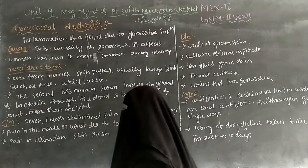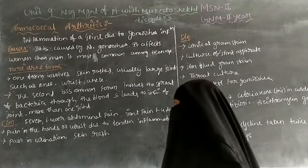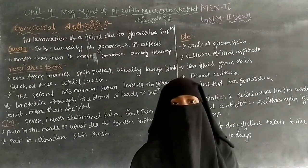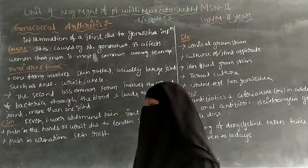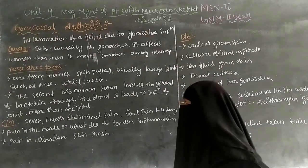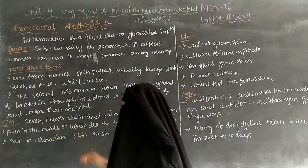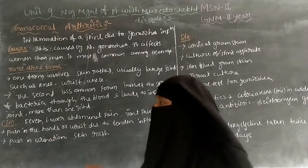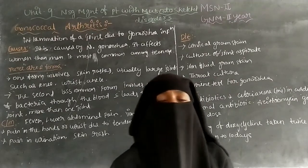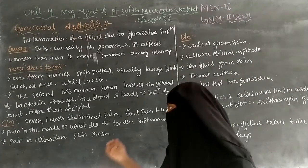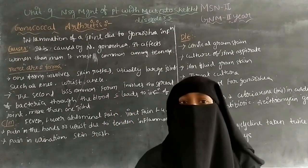The clinical manifestations of gonococcal arthritis include fever due to bacterial infection, abdominal pain, and severe joint pain lasting one to four days. There is also pain in the hands and wrist due to tendon inflammation, as the tendon becomes inflamed from the gonococcal infection.